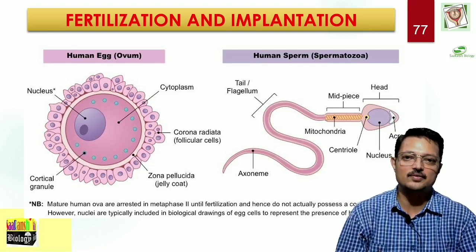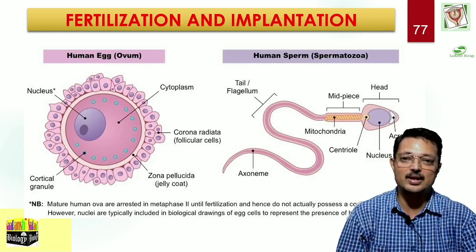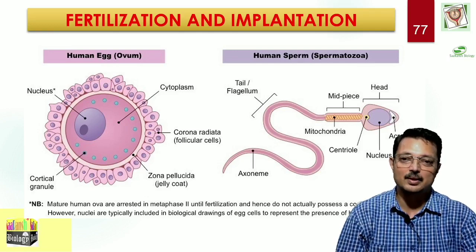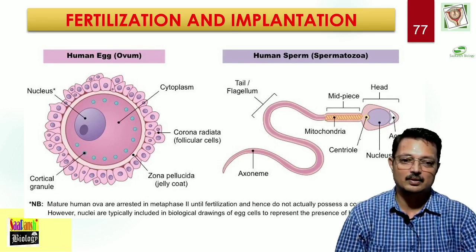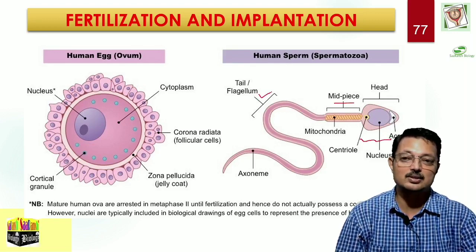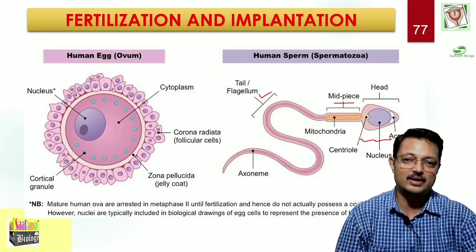You have seen the gamete formation. The male gamete is formed by the process of spermatogenesis, whereas the female gamete is formed by the process of oogenesis. The male gamete has a transformed structure from spermatid, with a head, middle piece, and tail, because it has to travel all the way through the female genitalia to the point of fertilization.